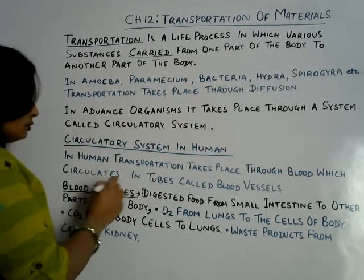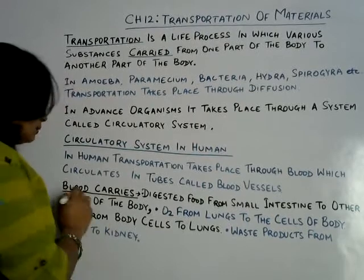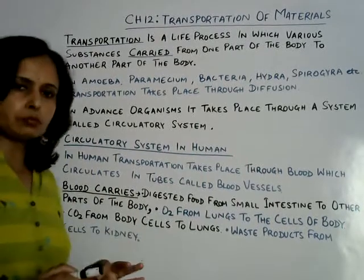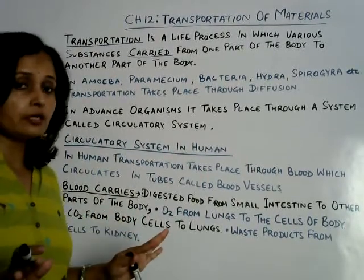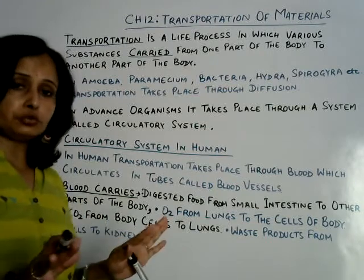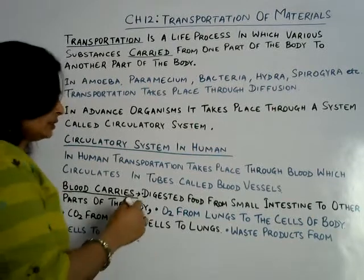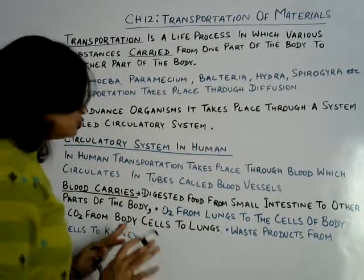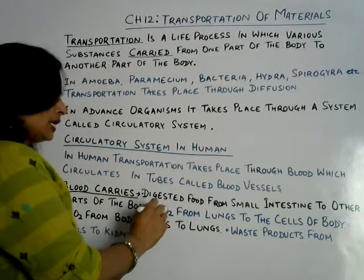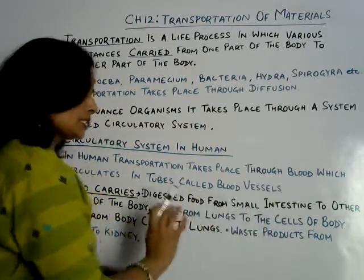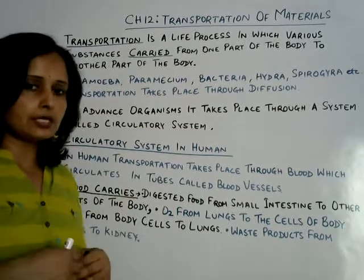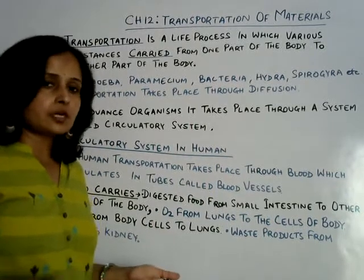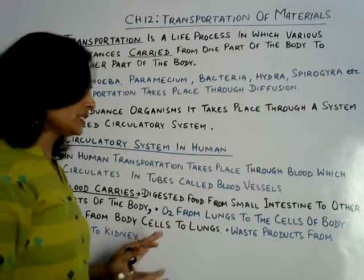What are the different functions of blood? Blood carries digested food from the small intestine to other parts of the body — to each and every cell — for oxidation. It takes nutrients and supplies them to every cell because all cells need nutrients for oxidation. Blood also carries oxygen from the lungs, from the alveoli of the lungs, to each and every cell of the body for oxidation of nutrients — for cellular respiration.